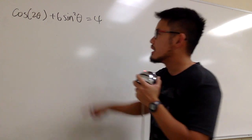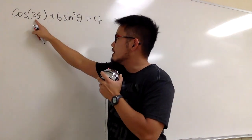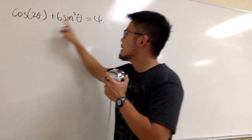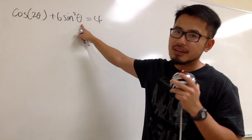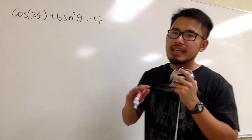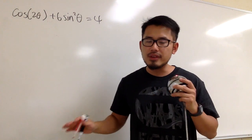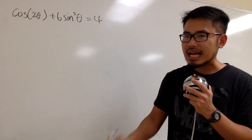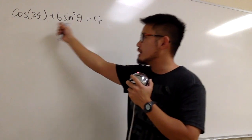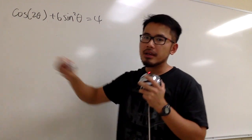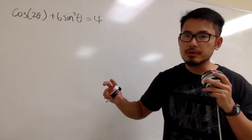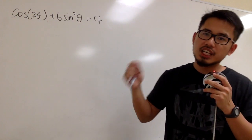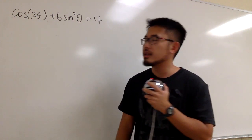The first thing we have to notice is that this right here is 2 theta, but then here we have theta. The angles are different — that's no good. We must have all the angles to be the same in a trig equation.